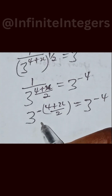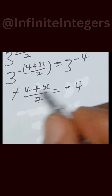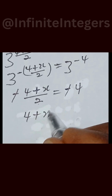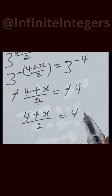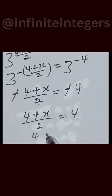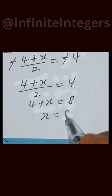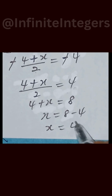From here, we can equate the powers since the bases are the same. We cancel out the negative sign, so we are left with 4 plus x over 2, equal to 4. Multiplying both sides by 2, we have 4 plus x equal to 8. Moving 4 to the right-hand side, we have x equal to 8 minus 4, so x equals 4.